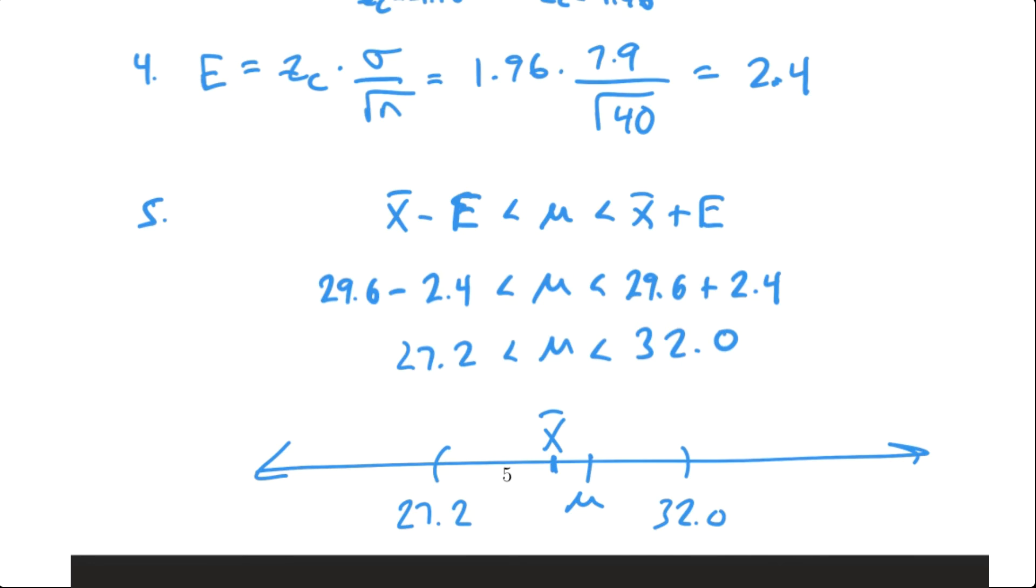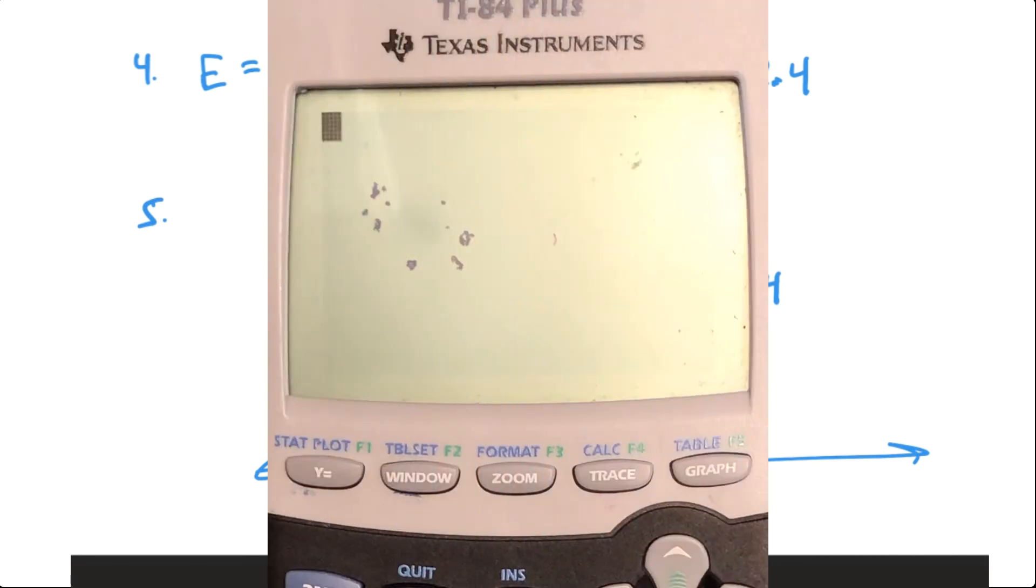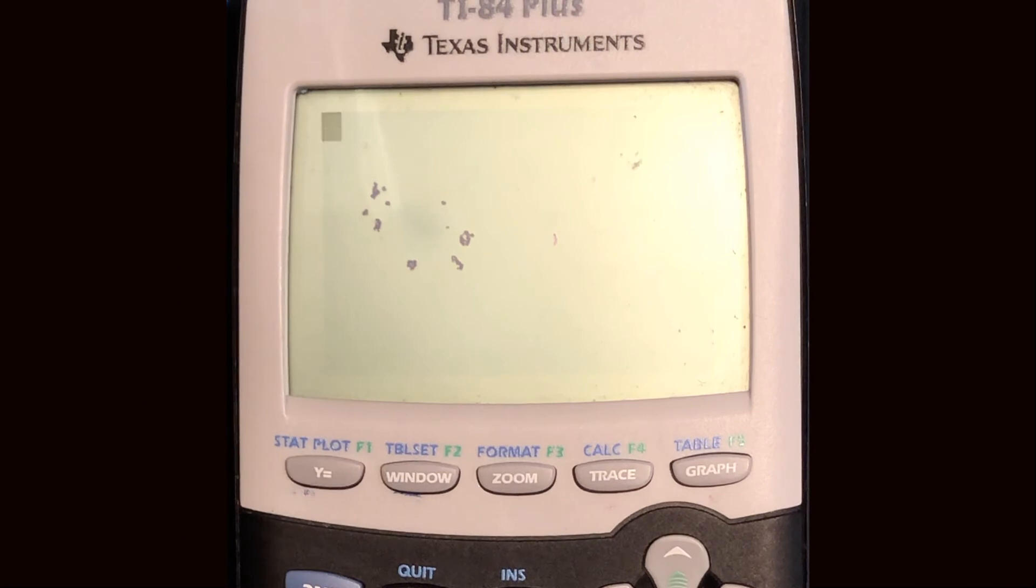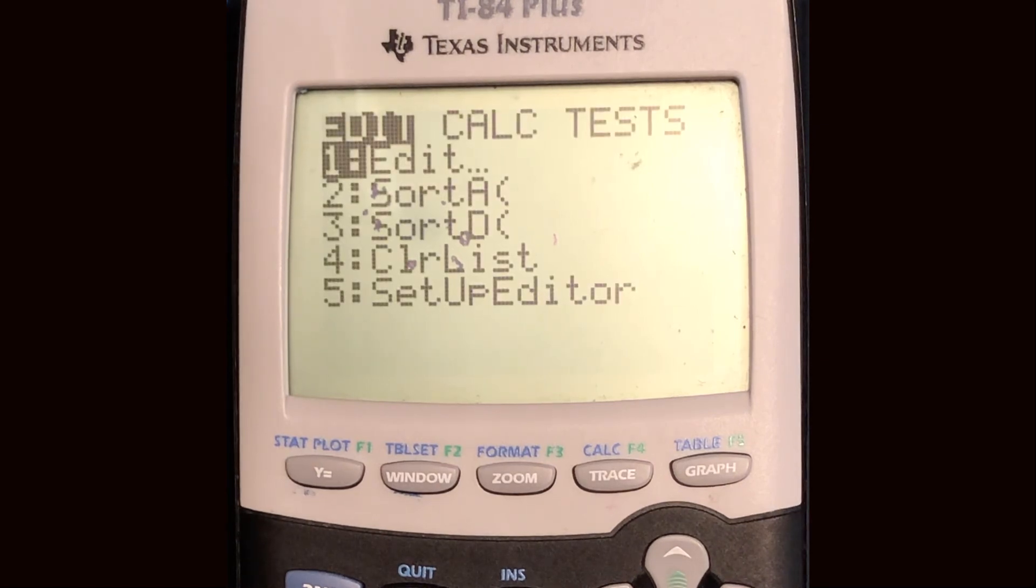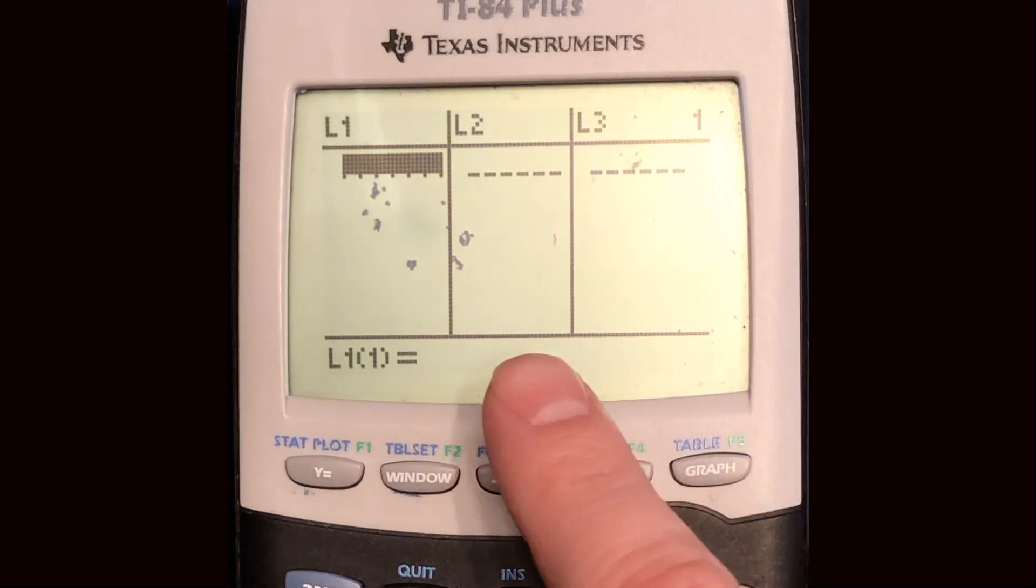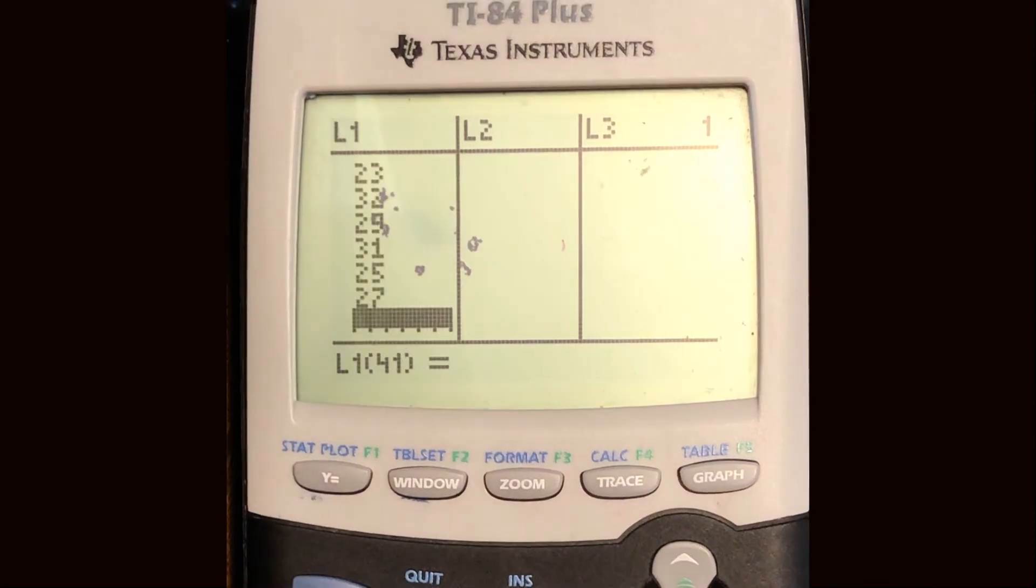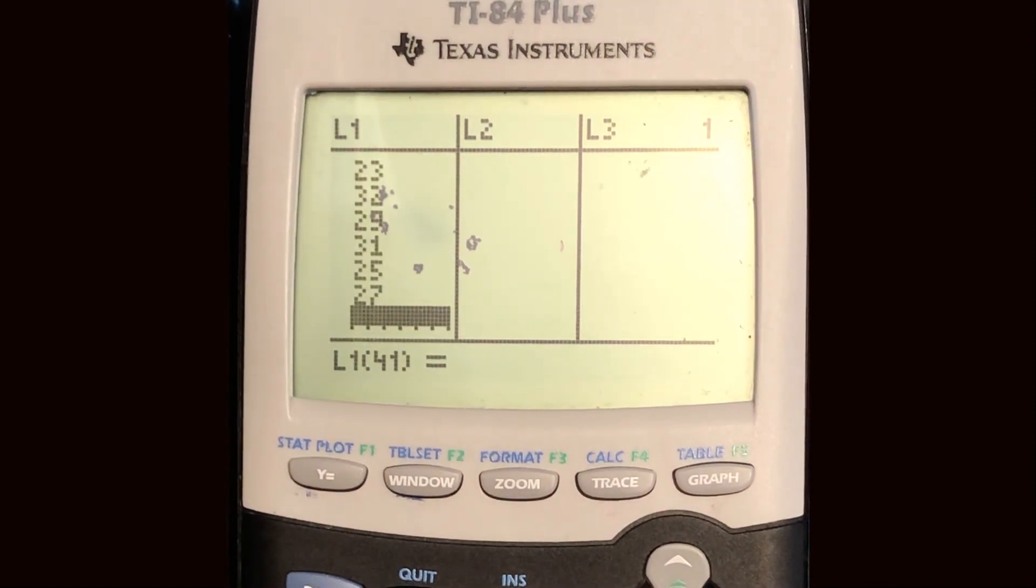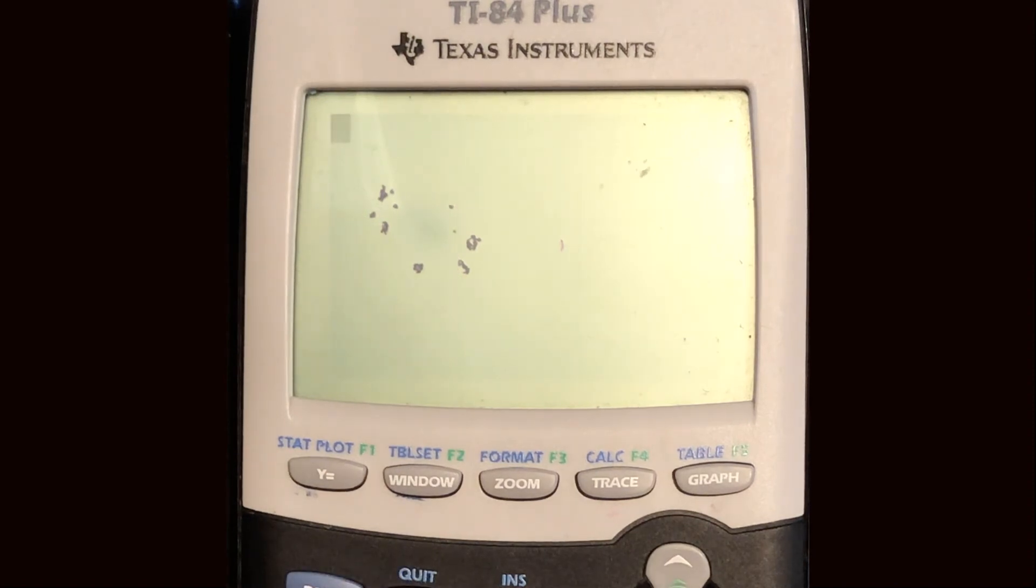Let's go ahead and see how to do this with the graphing calculator. So in this example we had a large data set of numbers and we can calculate the confidence interval using the graphing calculator two different ways. The first way is to go to stats, edit, and then enter in the data that we were given. All right there we go.